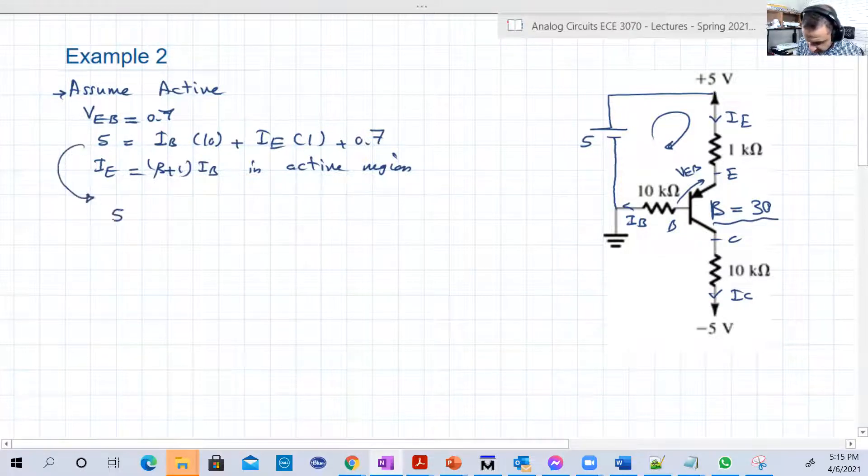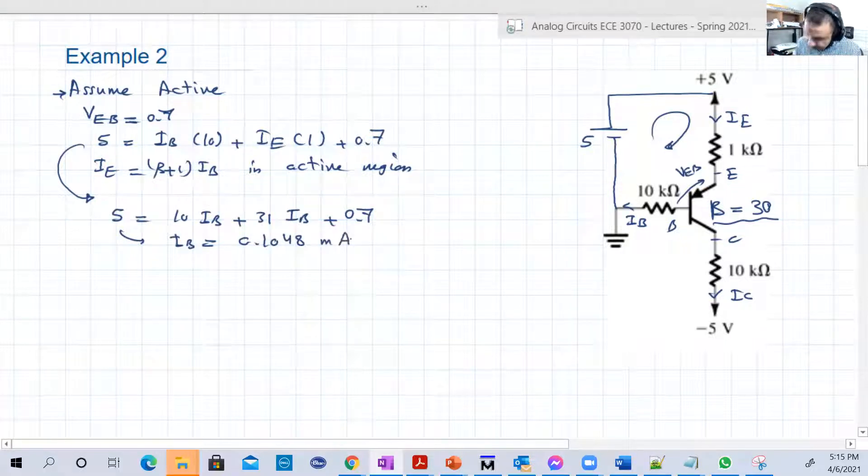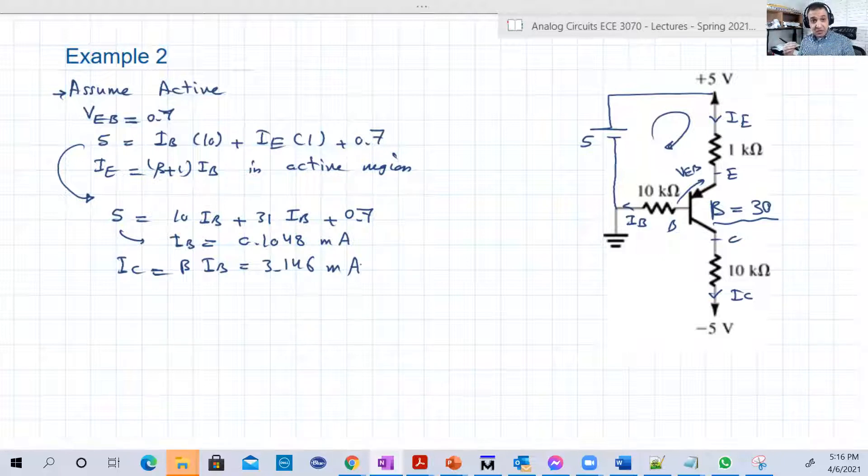So from that equation here, we can say that 5 equal to 10 IB plus 31 IB plus 0.7. So only one unknown here, which is IB. So IB will be equal to 0.148 milliamps. IC equal to beta IB. Beta is known. So, and IB now is known. So 3.146 milliampers.